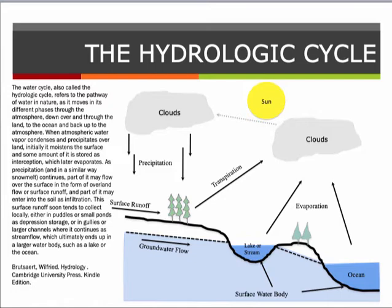The surface runoff tends to collect locally either in puddles or small ponds as depression storage, or in gullies or larger channels where it continues as stream flow, which ultimately ends up in a larger water body such as a lake or the ocean.